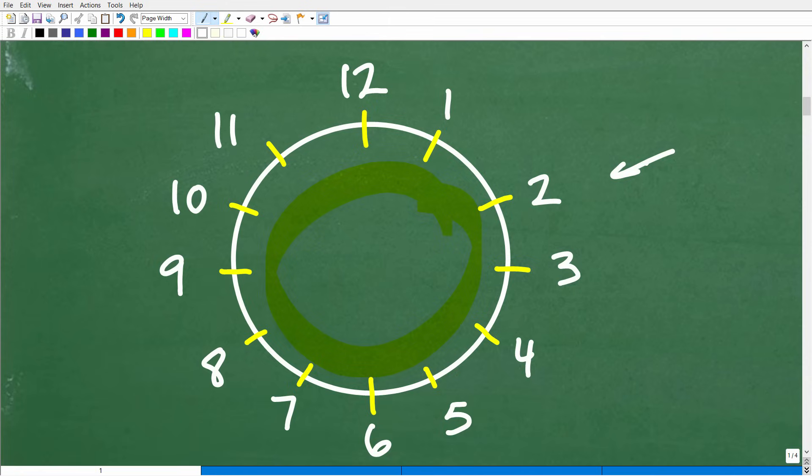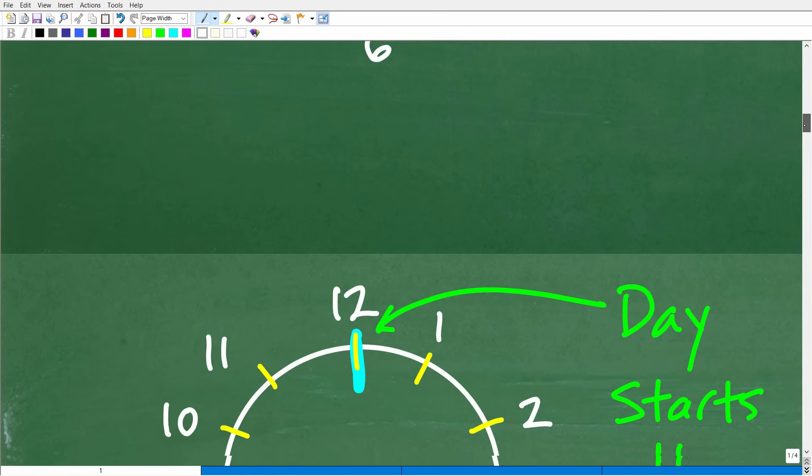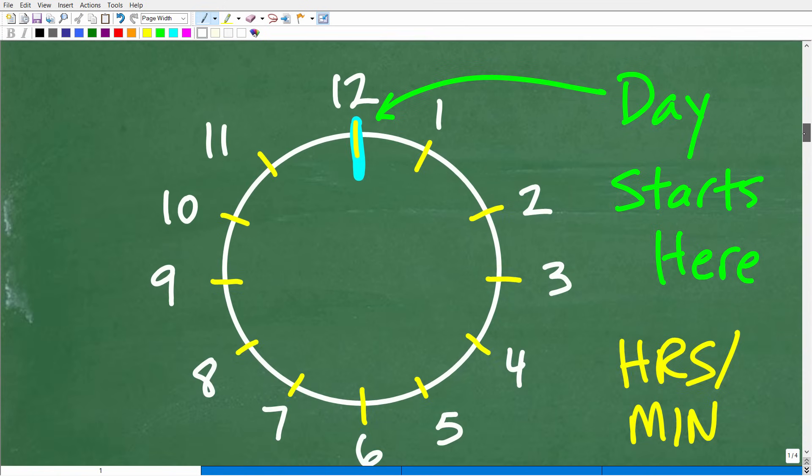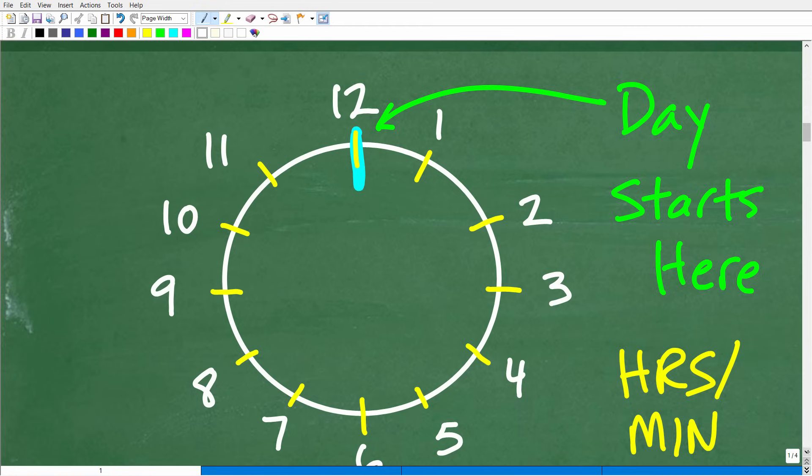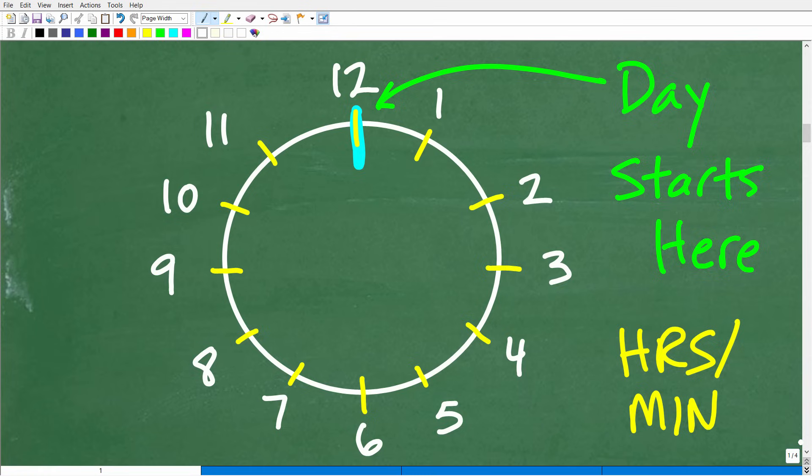But again, this problem involves time. So instantly for me, I'm thinking about a clock. Now, the next thing that I have to consider, and you have to consider as well, is we're talking about how much time has elapsed from the start of a day. Three-eighths of the day has passed by, but where does a day start?